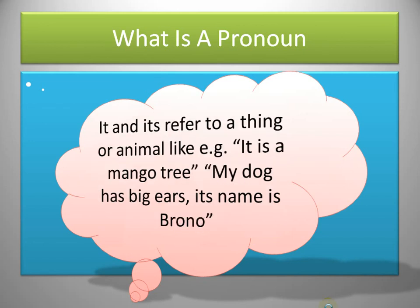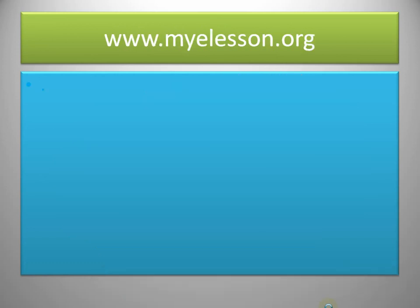'It' and 'its' refer to a thing or animal — like 'it is a mango tree', or 'my dog has big ears, its name is Bruno'. So here, 'it' and 'its' are being referred to the mango tree and the dog. I hope you enjoyed the lesson. Have a wonderful day ahead. Happy learning!